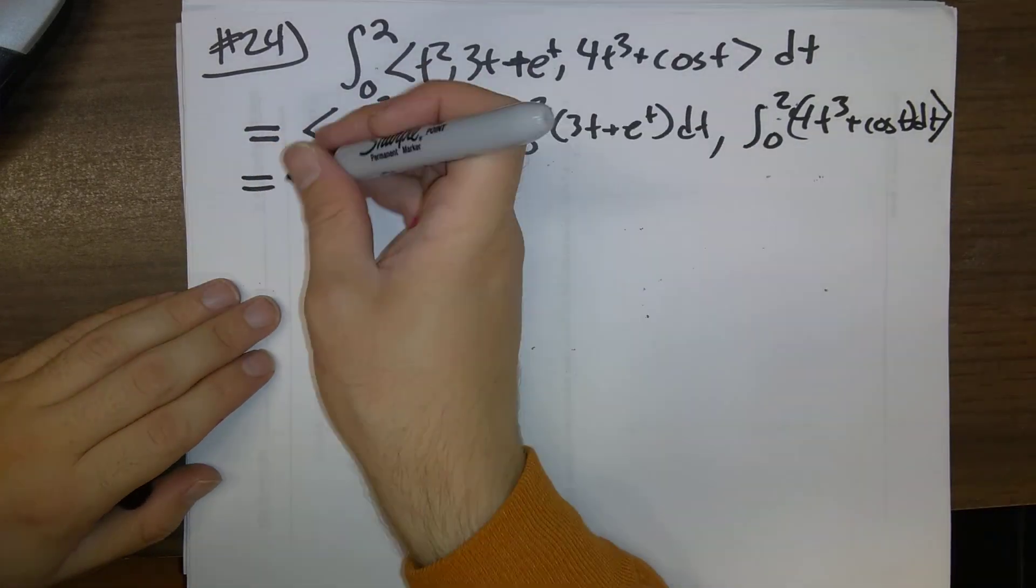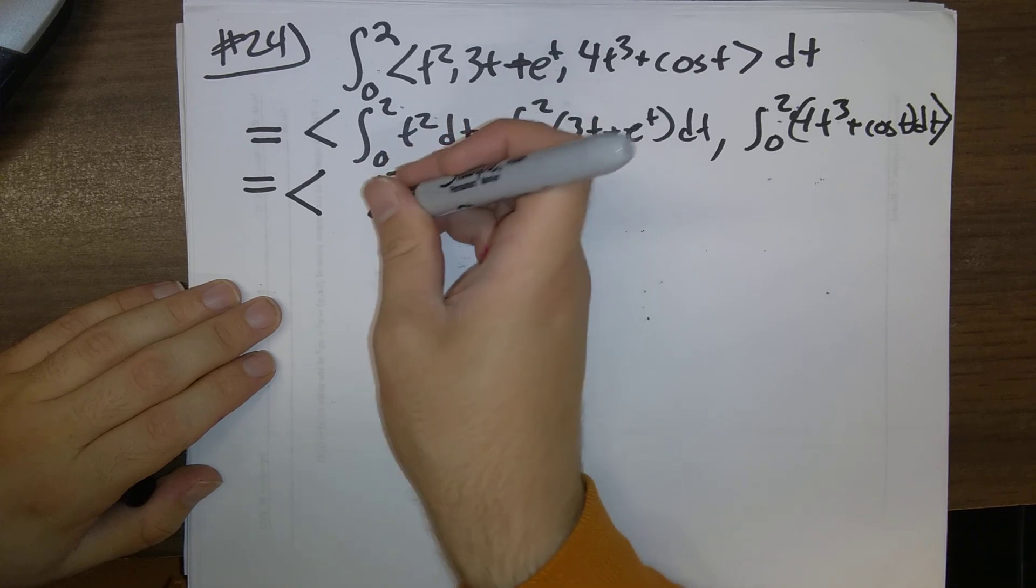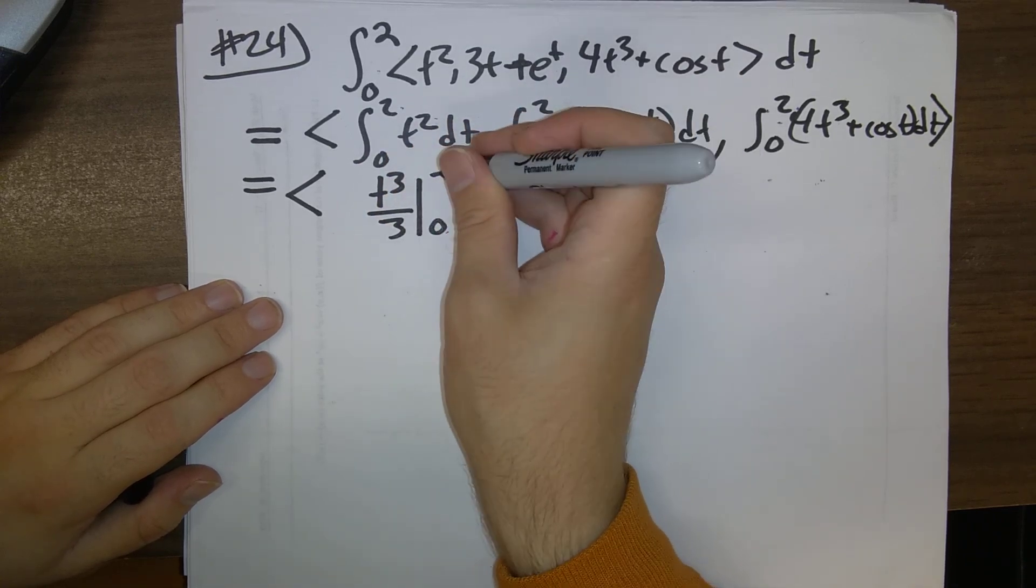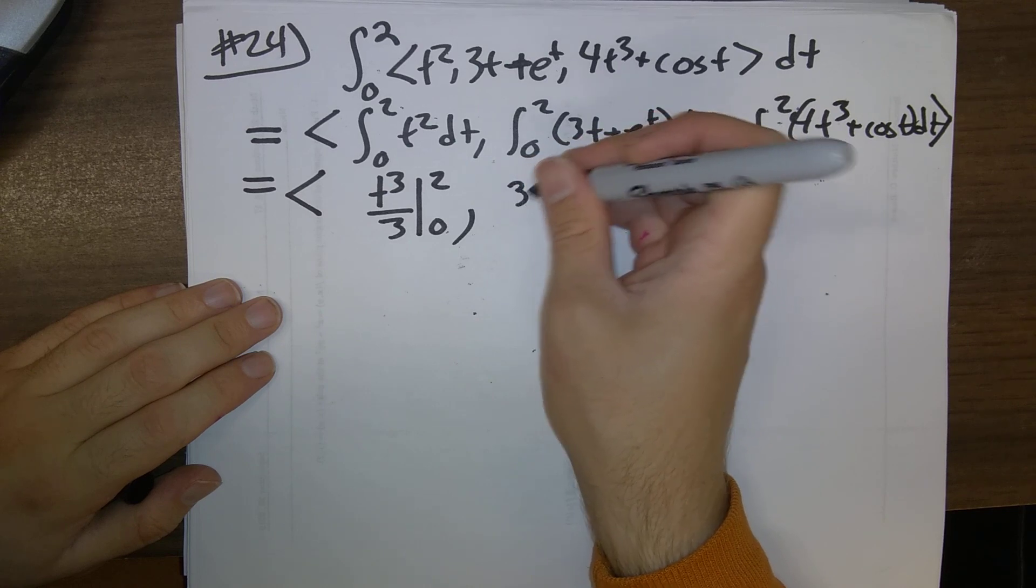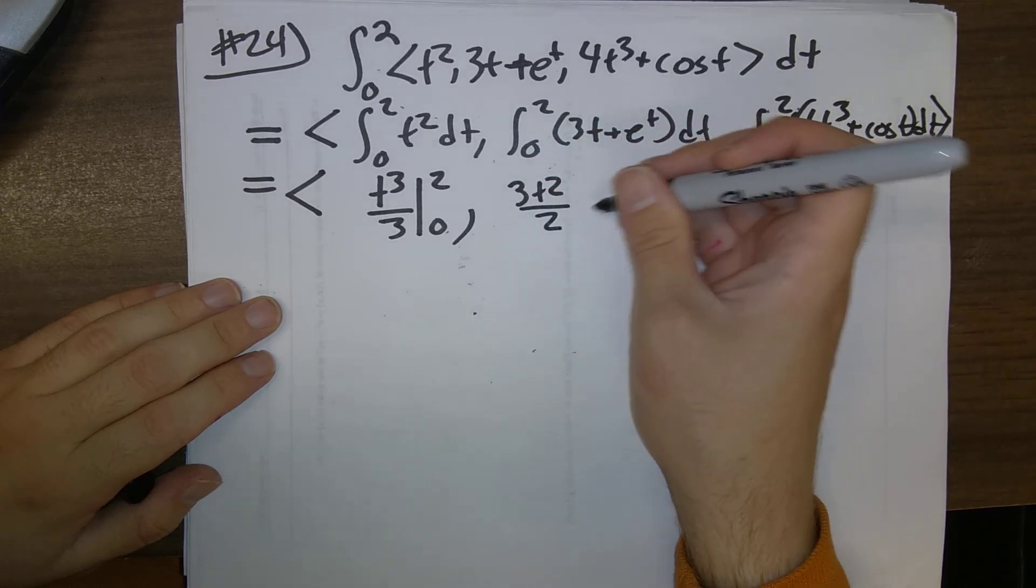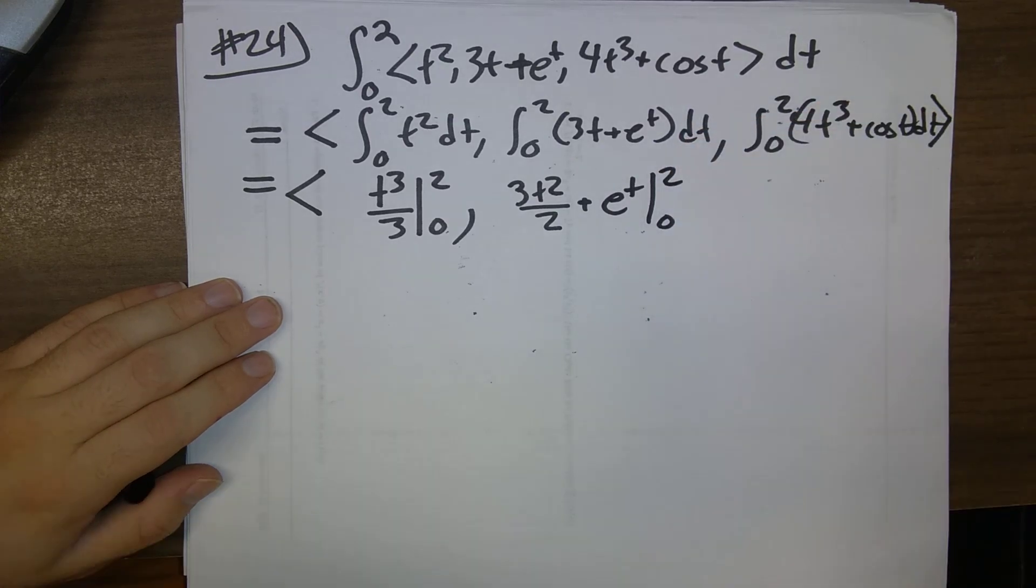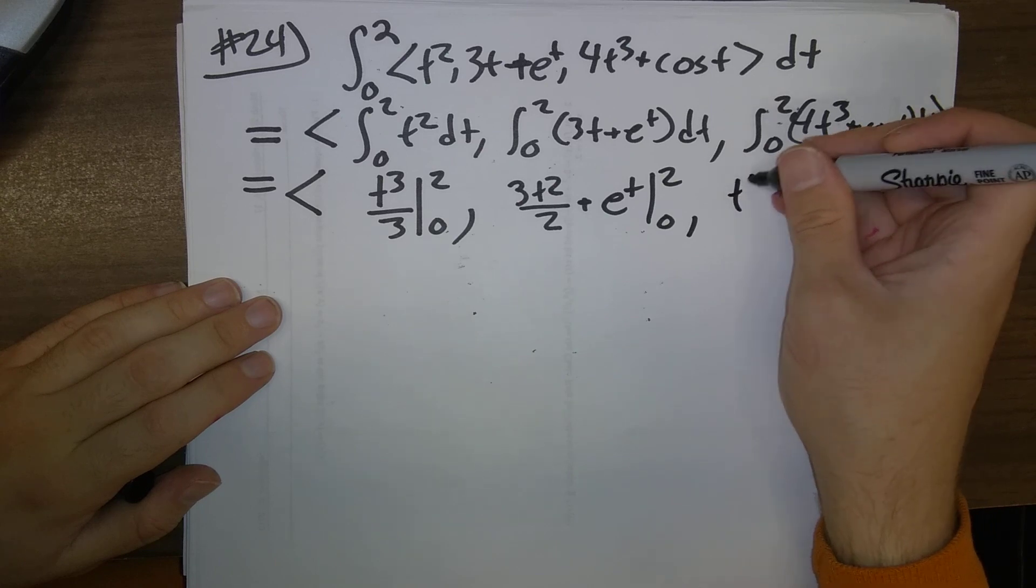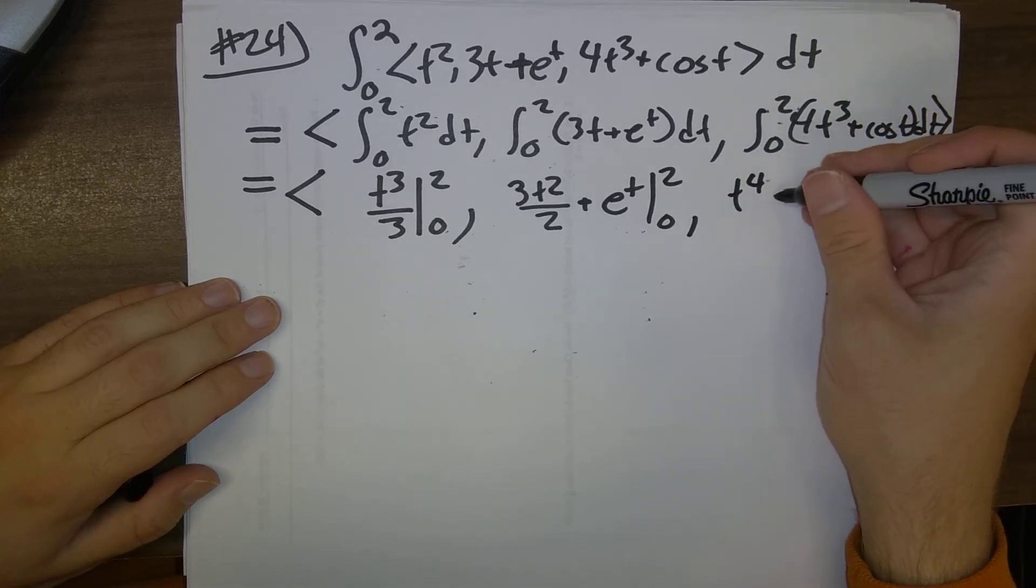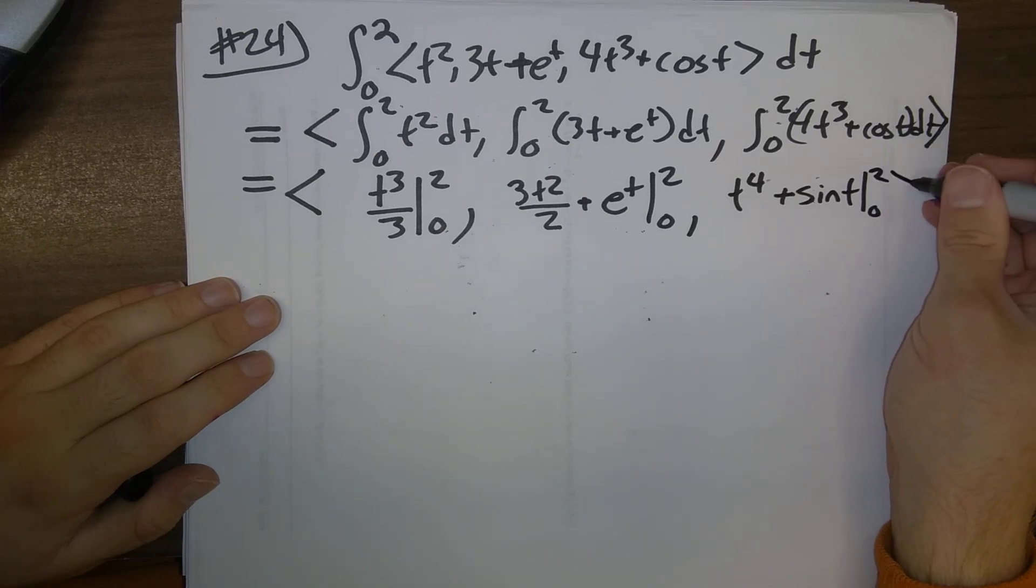So, what are these integrals? t squared gives us t cubed over 3, evaluate between 0 and 2. 3t gives us 3t squared over 2, e to the t gives us e to the t, evaluate t runs between 0 and 2. 4t cubed gives us t to the 4th, the integral of cosine t is sine t, evaluate that between 0 and 2.